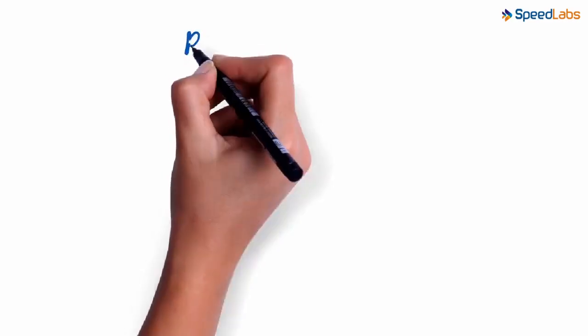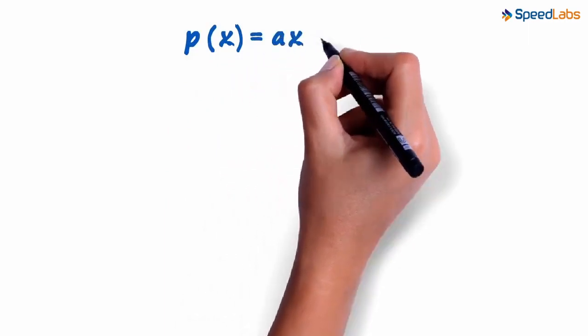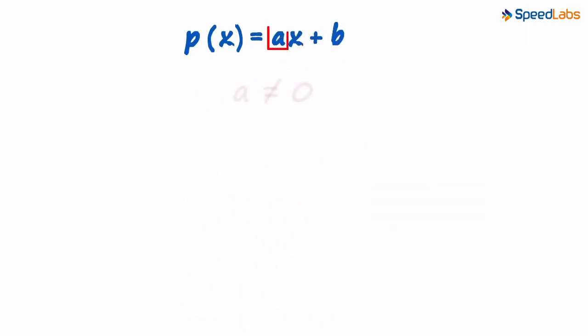The polynomial we saw in the previous video is of the type P of X equals AX plus B, where A does not equal zero. A is the coefficient of X and B is the constant term.